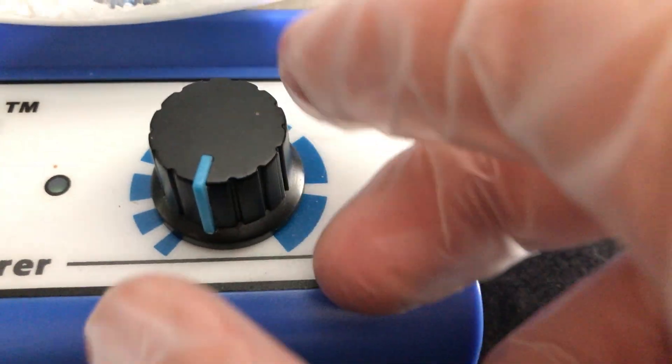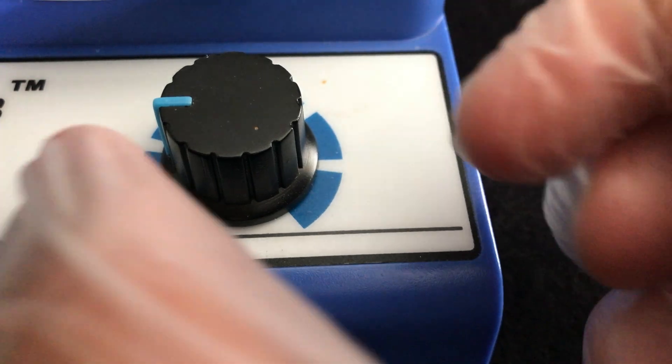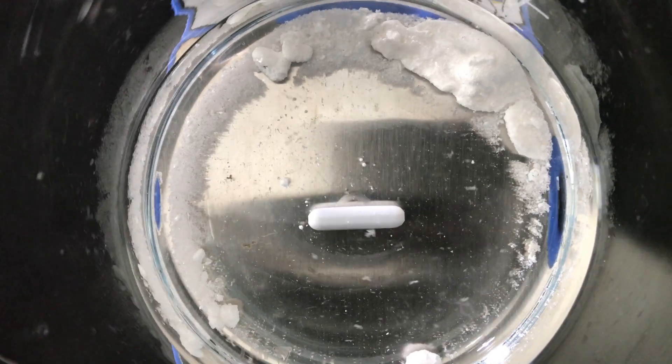The magnetic stirrer was turned on and I had to wait about an entire day until all of the mercuric chloride had dissolved.